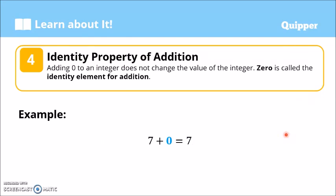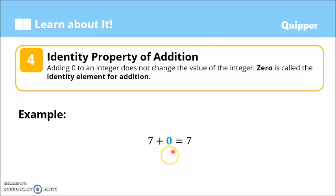Another property is the identity property of addition. Adding 0 to an integer does not change the value of the integer, so 0 is called the identity element for addition. Kahit anong number ang i-add natin sa 0, equals that number. Example: 7 plus 0 equals 7. It acts like a mirror — andito si 7, pag nakaharap siya sa salamin na 0, ang magiging sagot ay yung sarili niya: 7. That's the identity property of addition.